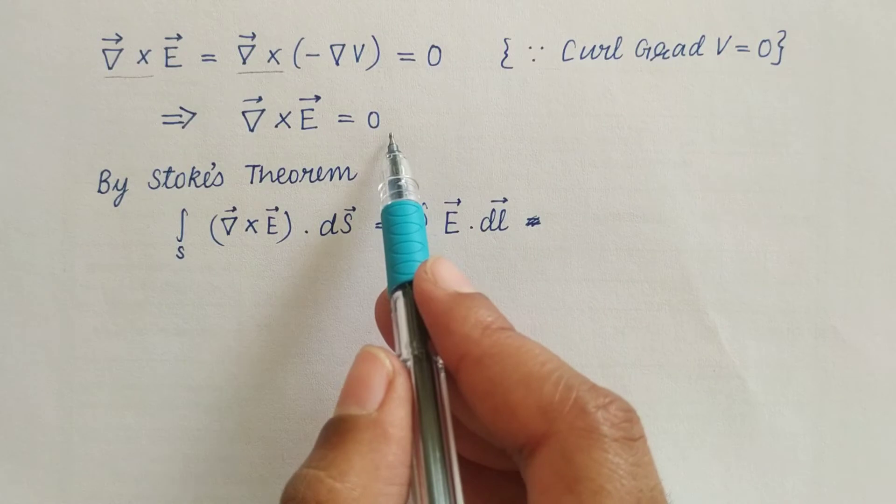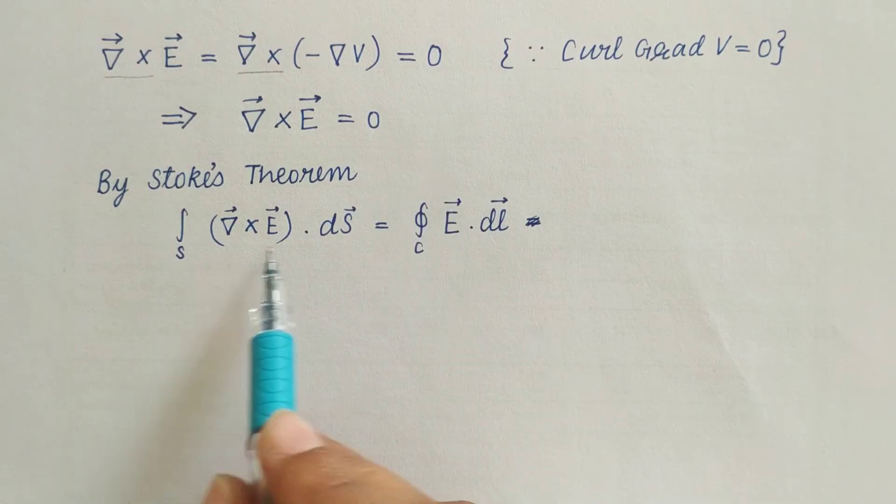As del cross E is equal to zero, it means this term is zero. Hence E dot DL is also equal to zero.